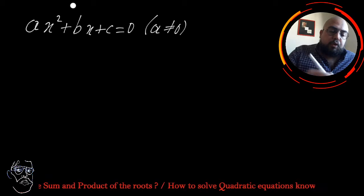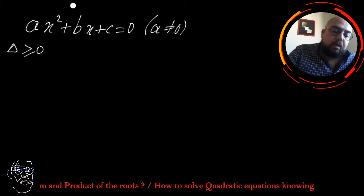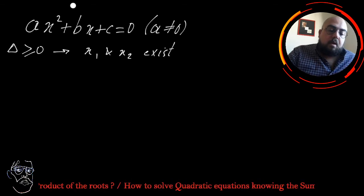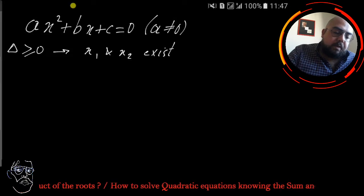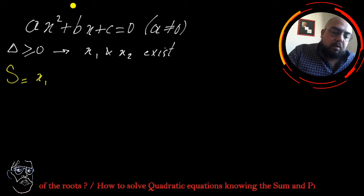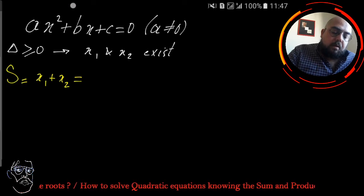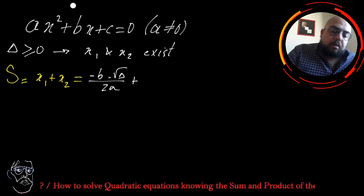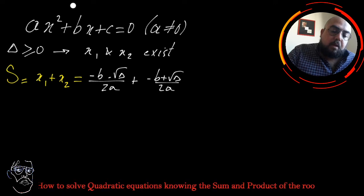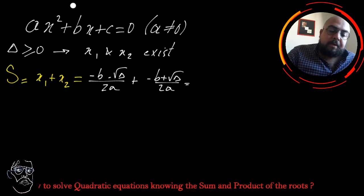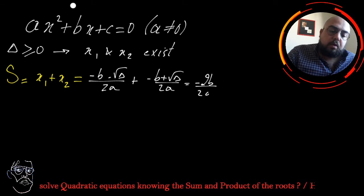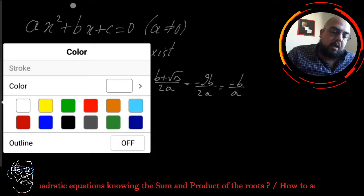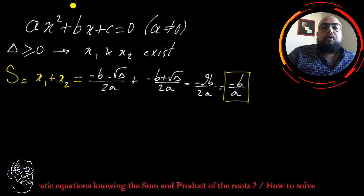Whenever the roots exist — which means whenever delta is positive or equal to zero — the roots x1 and x2 will exist. In this case I can calculate the sum. The sum S equals x1 plus x2, which equals minus b minus square root of delta over 2a, plus minus b plus square root of delta over 2a. So you will have minus 2b over 2a, which equals minus b over a. So minus b over a represents the sum of the roots whenever they exist.